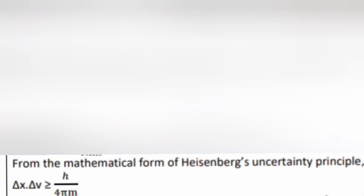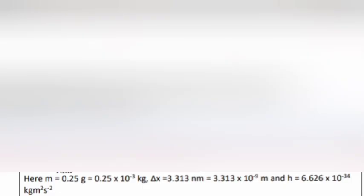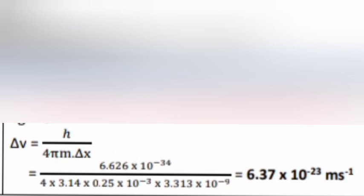Answer: From the mathematical form of Heisenberg uncertainty principle, Δx × Δv ≥ h / (4πm). Here m = 0.25 grams = 0.25 × 10^-3 kg, Δx = 3.313 nm = 3.313 × 10^-9 meters, and h = 6.626 × 10^-34. The final answer: 6.37 × 10^-23 m/s.